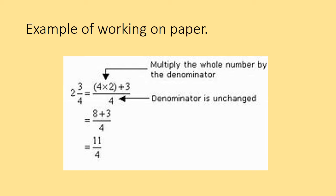Now after you finish the coloring, convert all the mixed number fractions into improper fractions. Remember: mummy must marry with daddy — that is 2 times 6 — then you add the son: plus 5, giving you 17 over 6. So the answer for number one is 17 over 6. Please show your working correctly and neatly for each question.